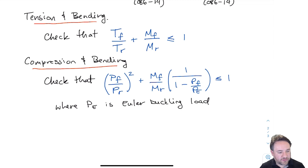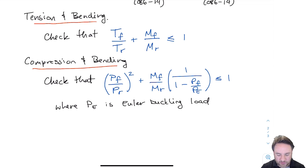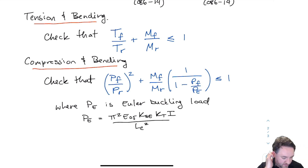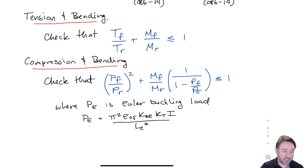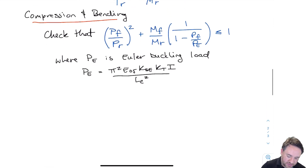There is one more resistance quantity in this equation: PE, which represents how close our section is to the Euler buckling load. It is calculated using E05 — the 5th percentile Young's modulus, since this is a strength equation — modified by KSE and KT, multiplied by the moment of inertia I, and divided by the effective length LE squared.